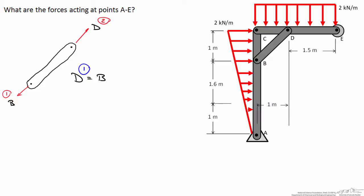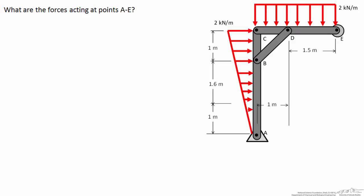As we work through this problem I'll identify unknowns and all the equations we can write. At the end we'll have seven unknowns and seven equations, and we'll be able to solve all the values we need. So starting out we have two unknowns and only one equation. Let's continue by drawing a free body diagram of member CDE at the top.